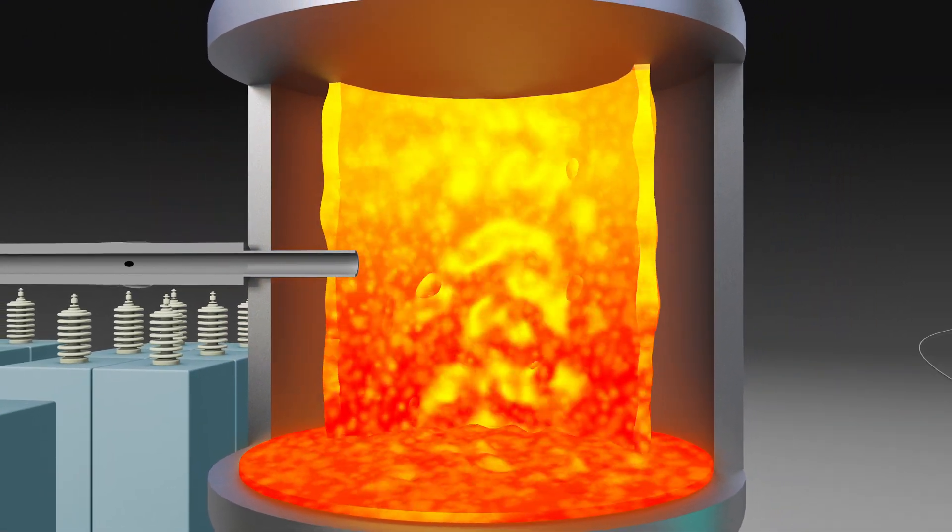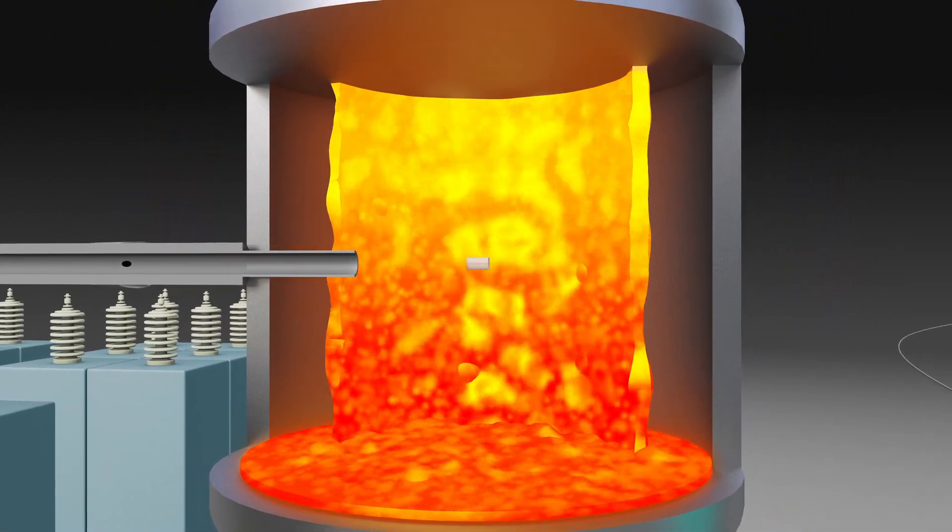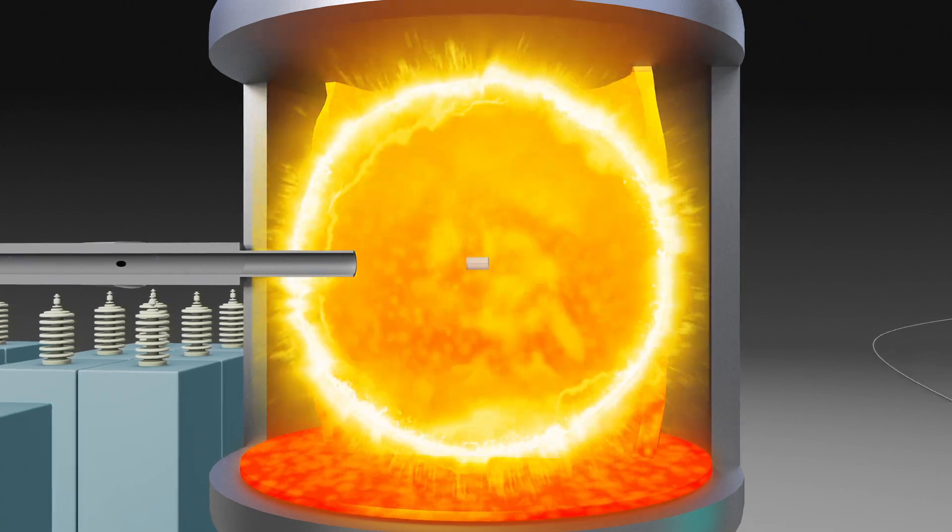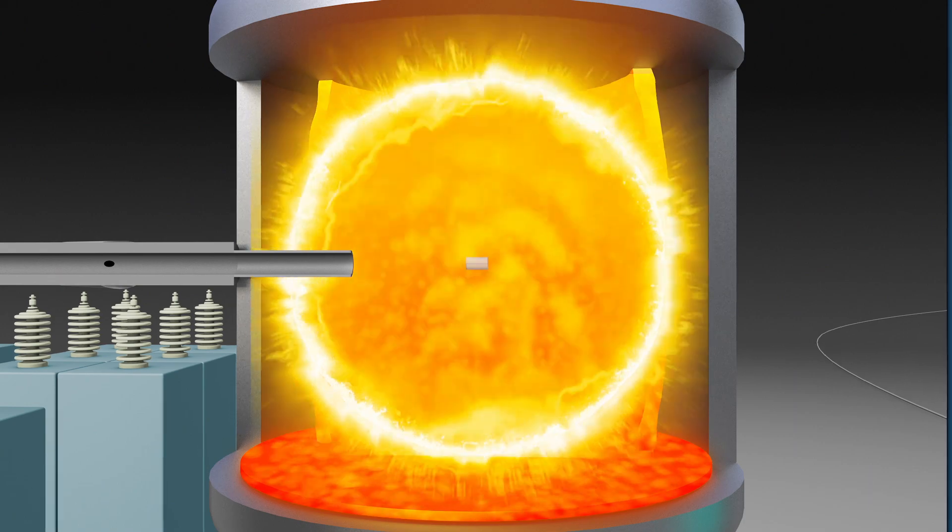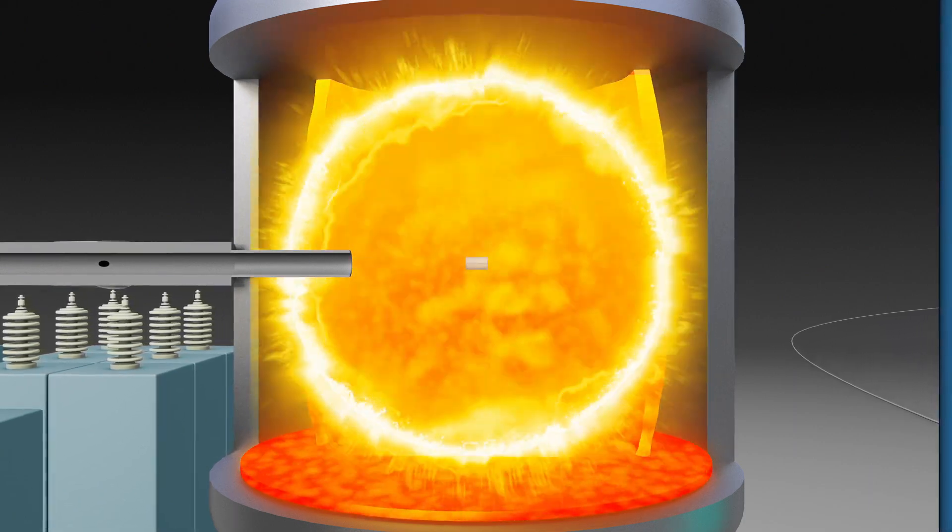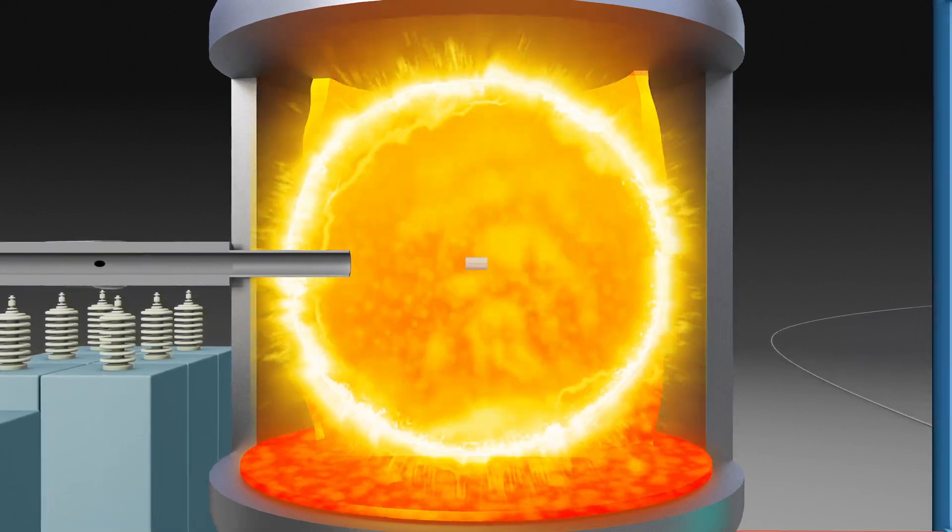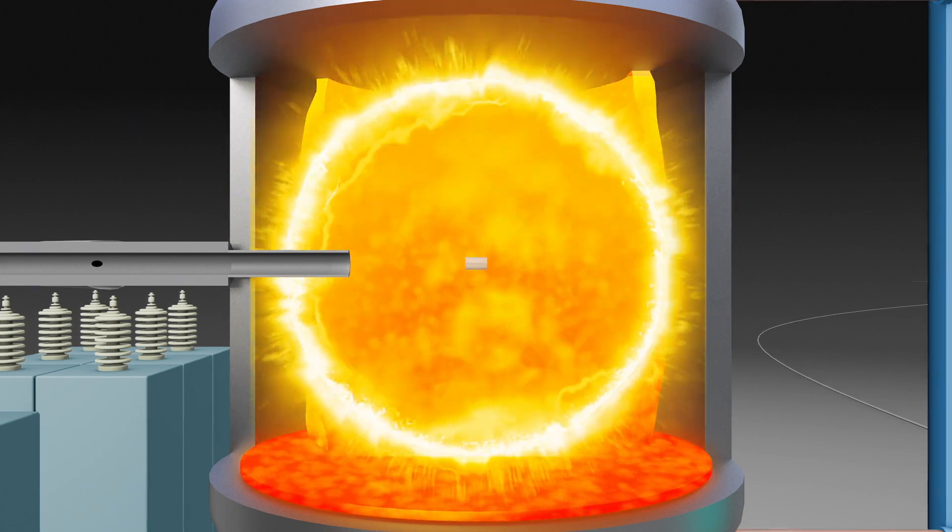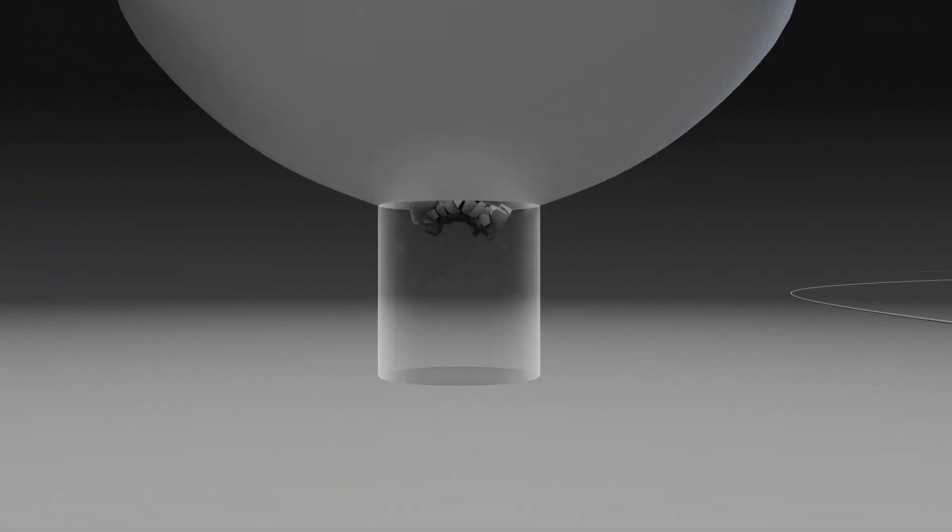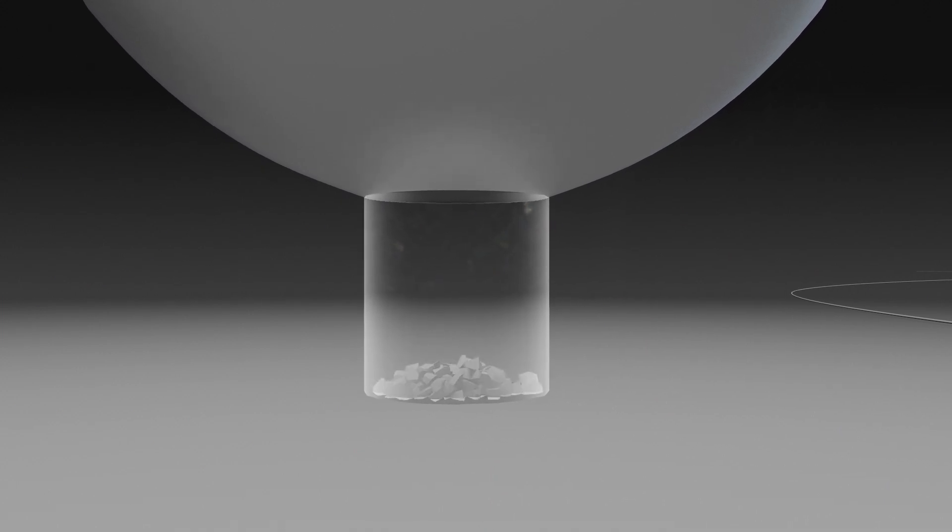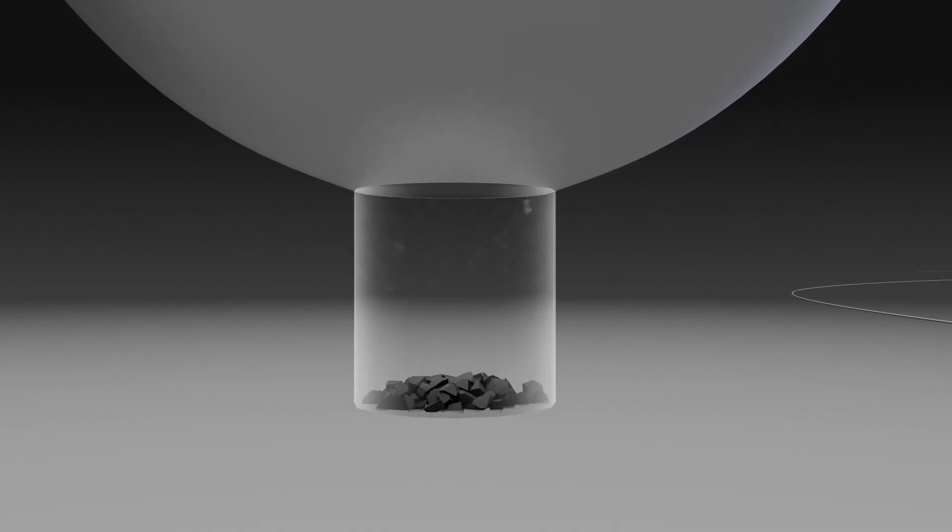This releases tremendous amounts of energy within the reaction chamber. The energy released from each fusion pulse is captured by a flowing circular waterfall of molten salt. The molten salt also serves as a liquid first wall to protect the chamber from neutron damage. Fragments of the exploded projectiles and fuel targets are carried away by the molten salt and filtered out for reuse.